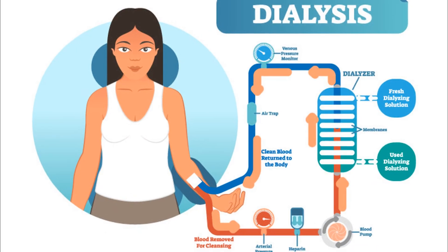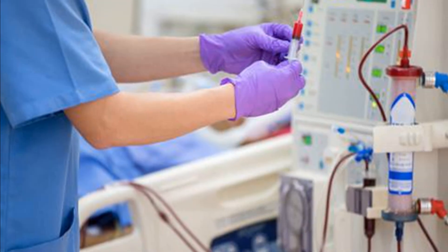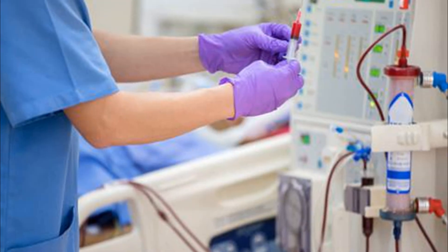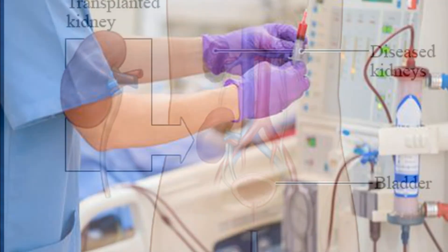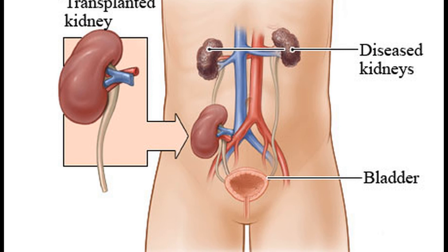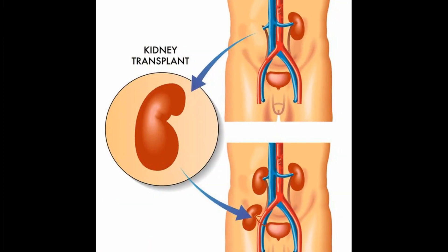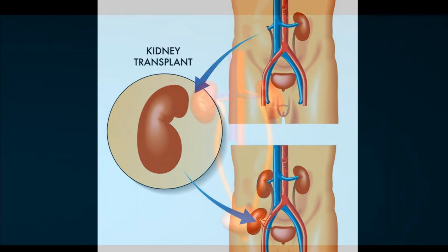As an alternative, a patient with both kidneys damaged can undergo a kidney transplant from a suitable donor. The donor can live normally with one single kidney, and the recipient gets a new lease of life.